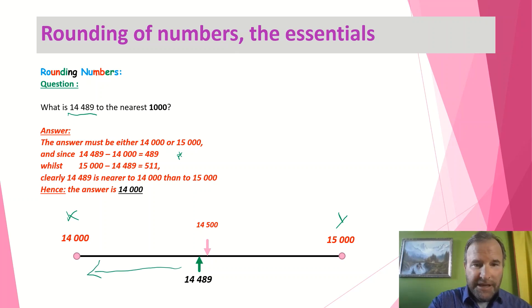If we have a look at 15,000, you can see it's further away or a larger number, so that's larger and that's smaller. So clearly 14,489 is closer to 14,000. So to the nearest thousand you would say closer to 14,000 is the answer. Okay, let's go on to the next question.